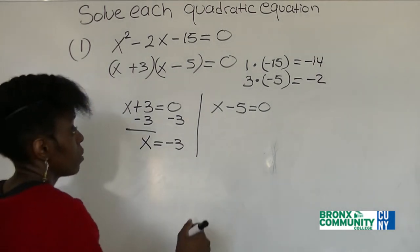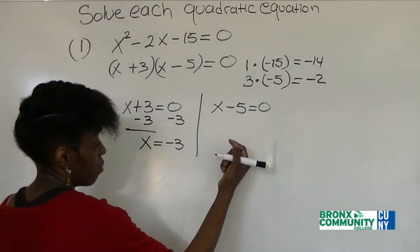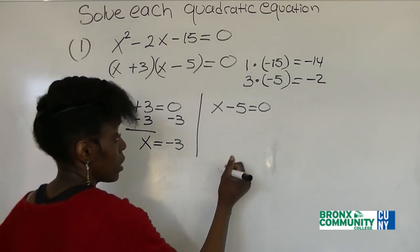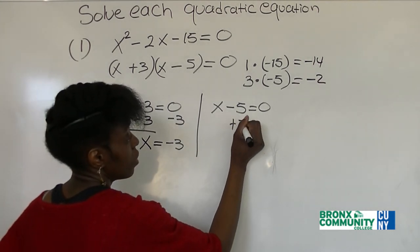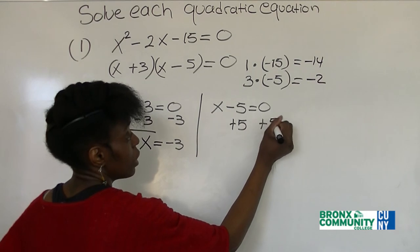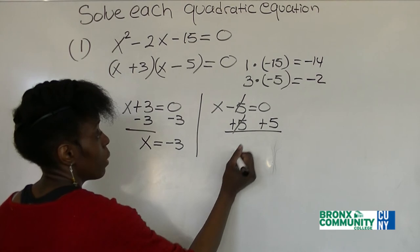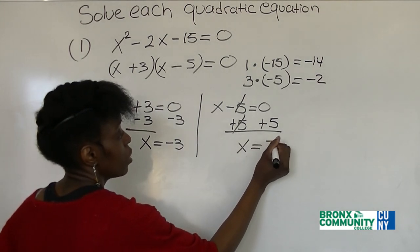Now with this one, we have negative 5. So how do we isolate the x? We add 5 to both sides of the equation. This cancels, and now we have x is equal to 5.